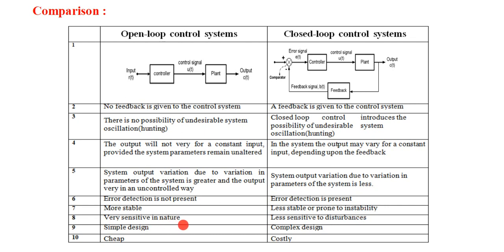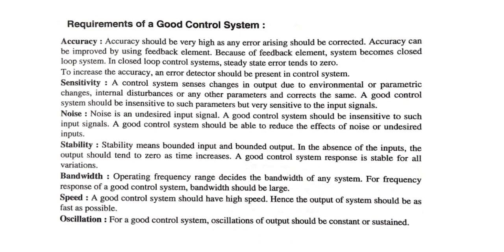Eighth point: open loop systems are very sensitive in nature, while closed loop systems are less sensitive to disturbances. Ninth point: the design of an open loop control system is very simple, while the design of a closed loop control system is complex. The cost of an open loop control system is very less — it is cheap — while a closed loop control system is costly.